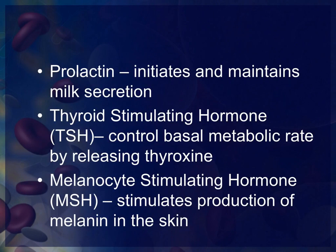Prolactin controls milk production — oxytocin allows the milk to come in, but prolactin is the one that actually produces the milk. Thyroid-stimulating hormone (TSH) stimulates the thyroid gland, controls metabolism, and releases the hormone thyroxine. Melanocyte-stimulating hormone (MSH) stimulates the production of melanin in the skin, which causes tanning and accounts for darker hair color, eye color, and skin color.